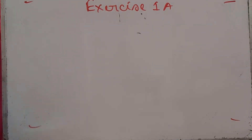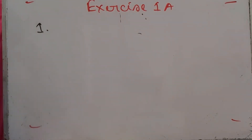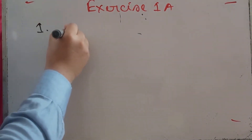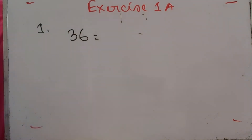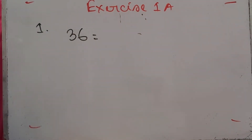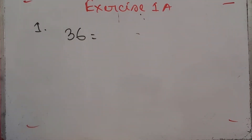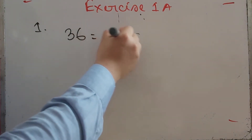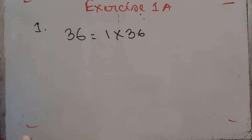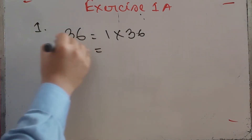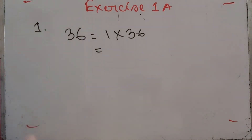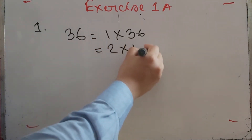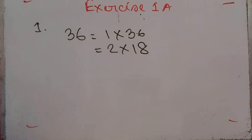Exercise 1A, Number 1: Write down all the factors of 36. We need to find all numbers that divide 36. Dividing 36 by 1 gives 36, and dividing 36 by 2 gives 18.